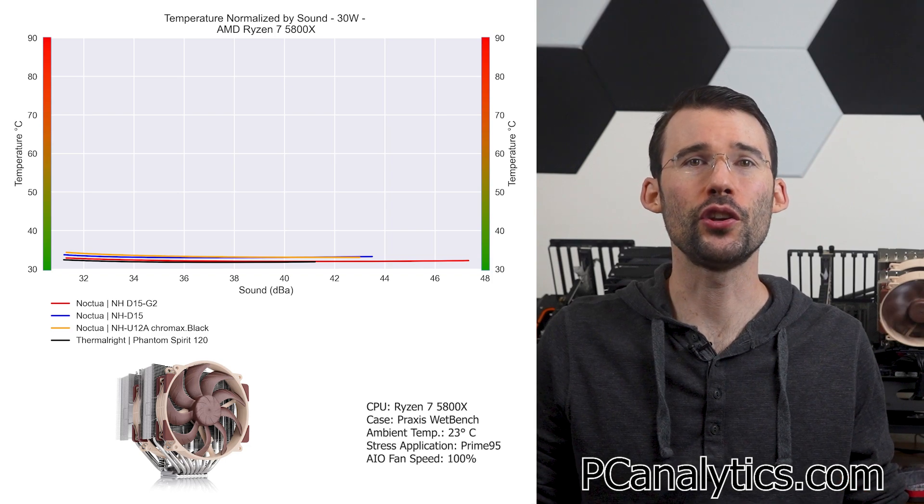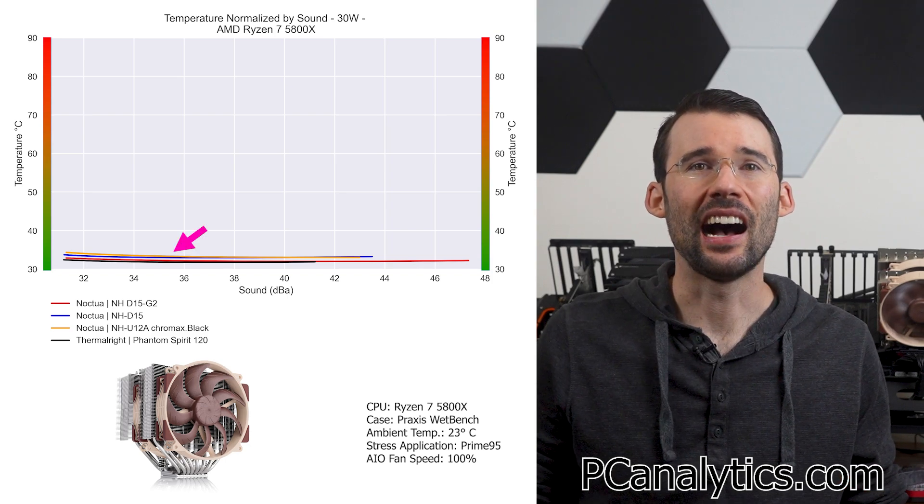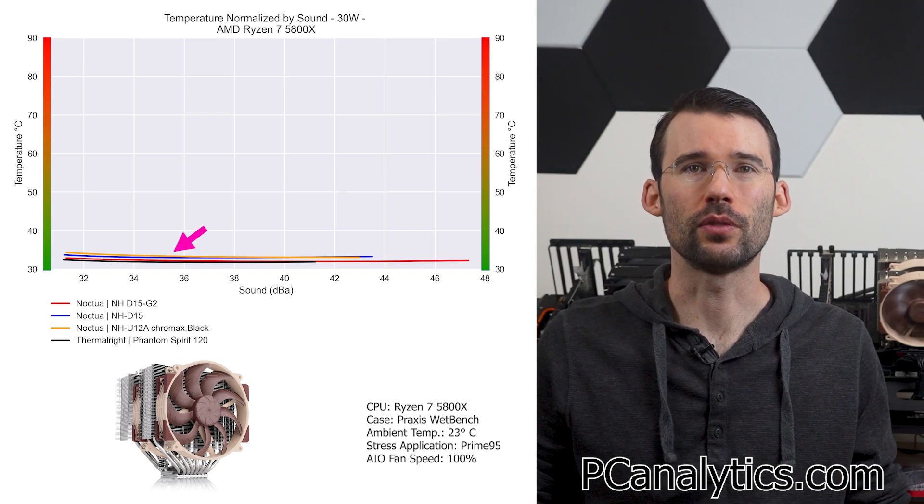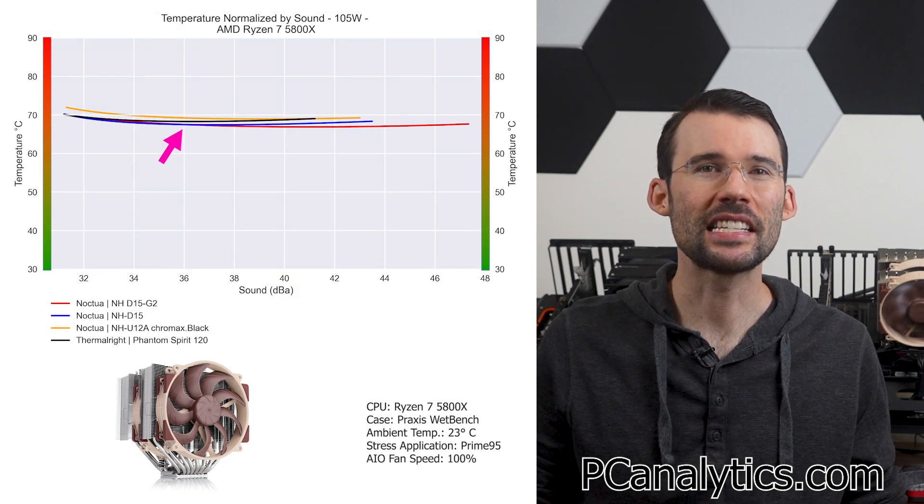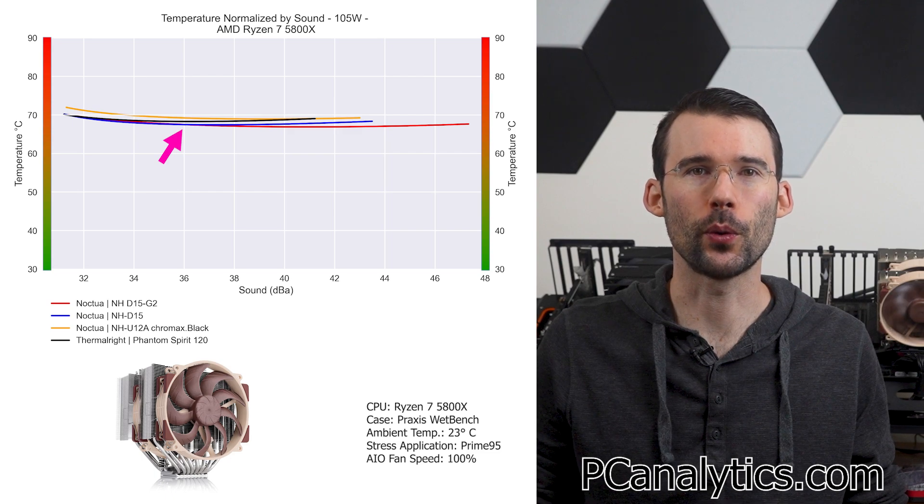But comment below on your thoughts on the new NH-D15G2. At idle, the NH-D15G2 runs slightly cooler for a given noise level. And when we turn up the heat to 105 watts, we can see similar performance among the coolers at the lower noise levels.